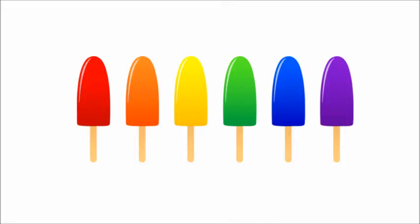These are popsicles and we can see different colors of popsicles: red, orange, yellow, green, blue, purple. So children, let's count the popsicles. Using your pointer finger, we will count from the red popsicle. 1, 2, 3, 4, 5, 6. So we have 6 popsicles.